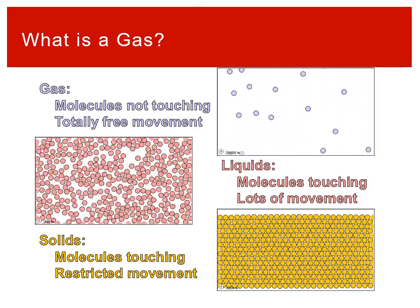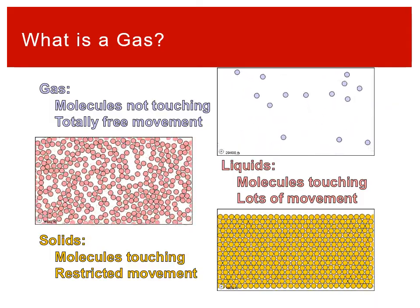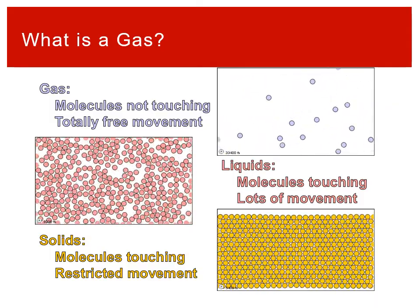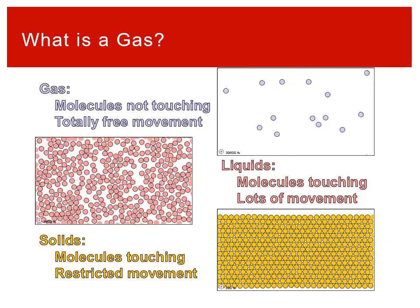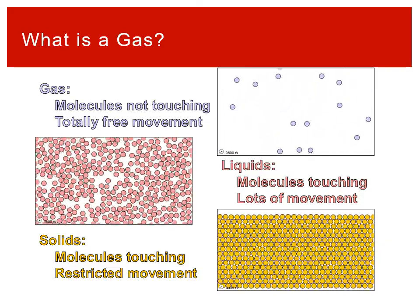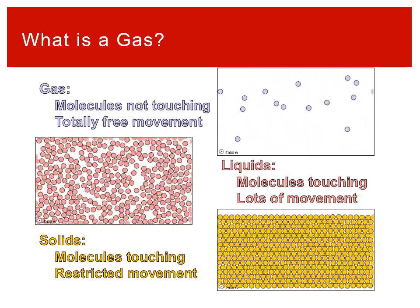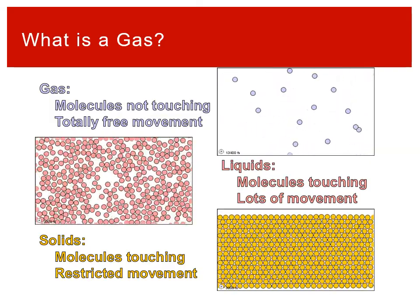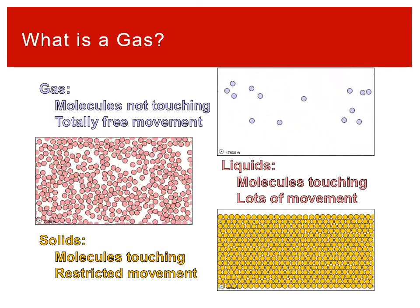Here I have a diagram depicting the atoms or molecules of each of our phases of matter for solids, liquids, and gases. These three different phases of matter are distinguished by the movement of molecules and whether or not — and how close together — those molecules are.